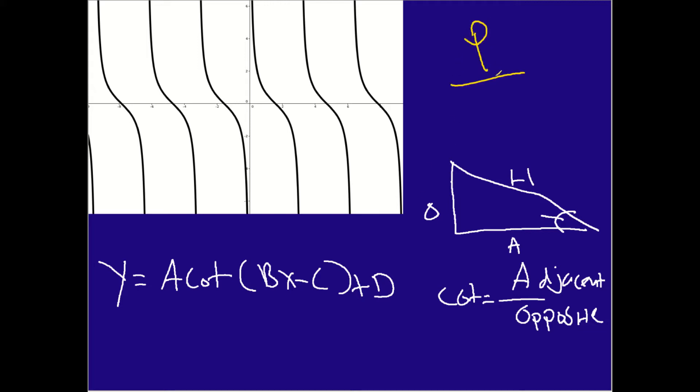but period is pi over the absolute value of b. When this bottom value becomes a zero in whatever situation, it's undefined, and that's why you have the space between it, and it becomes periodic. Periodic in that it returns at a specific interval over and over and over again.